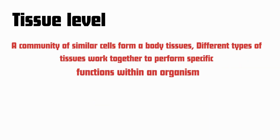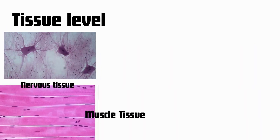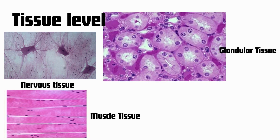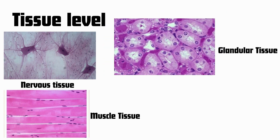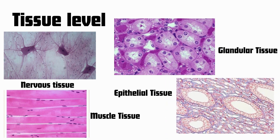The next level is the tissue level. A community of similar cells forms body tissues. Different types of tissues work together to perform specific functions within an organism. In animals, common tissue types include nervous tissue, muscle tissue which functions to contract and relax the body, glandular tissue which makes and secretes different chemicals, and epithelial tissue which covers the body surface.